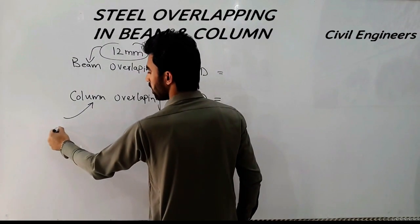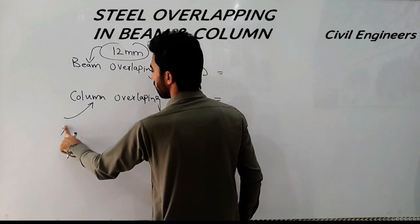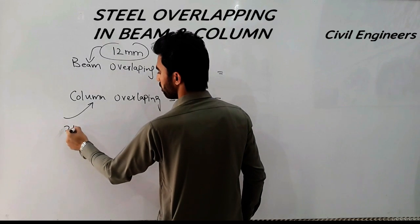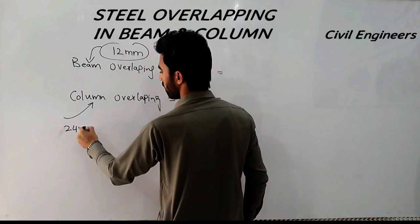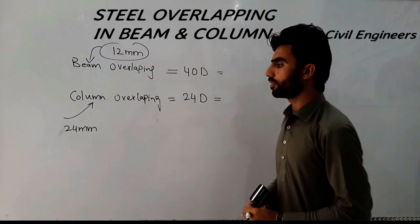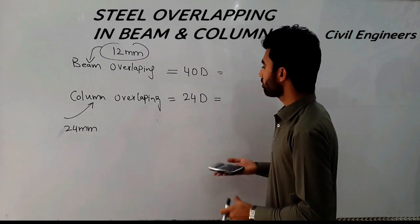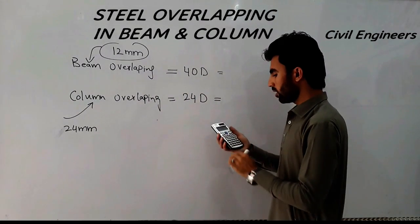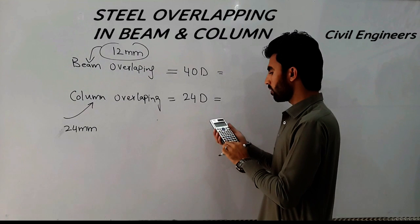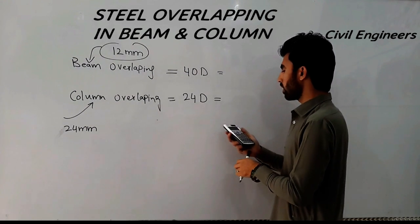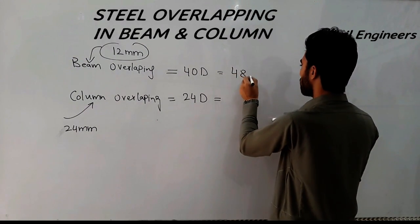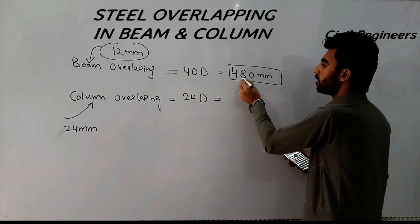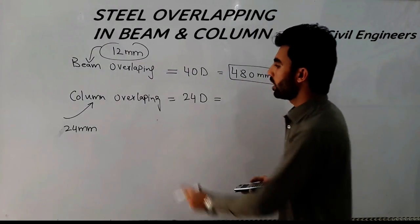For the beam example, I will use a bar diameter of 20mm. So 20mm × 40 = 480mm. The overlap length for a 20mm bar in a beam will be 480 millimeters.